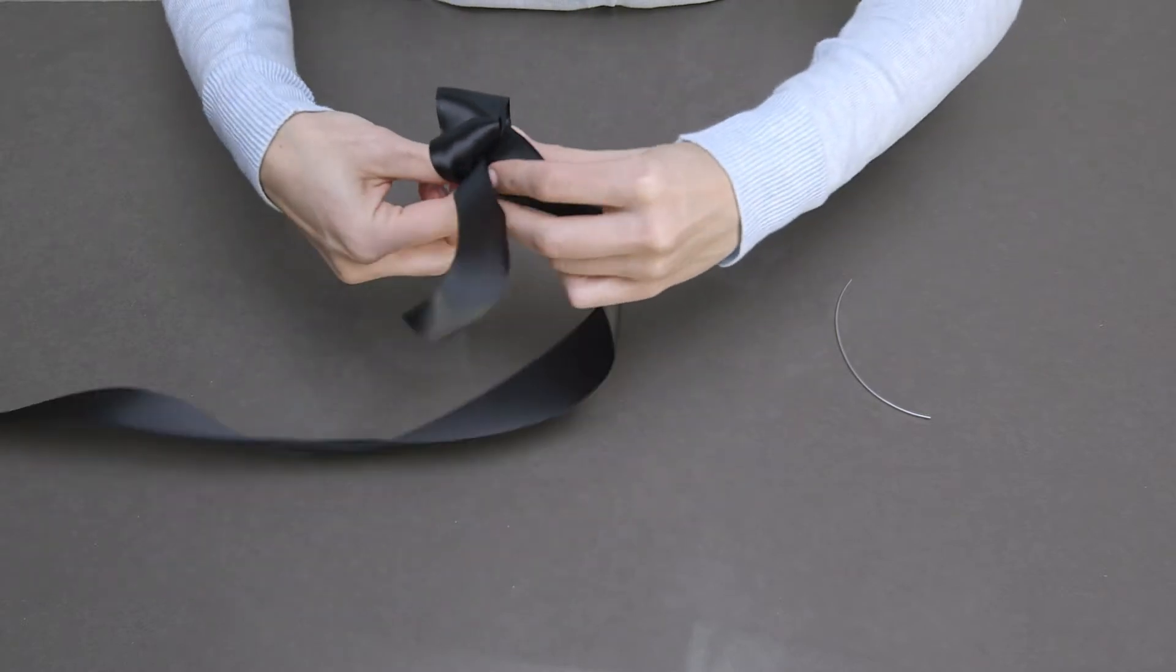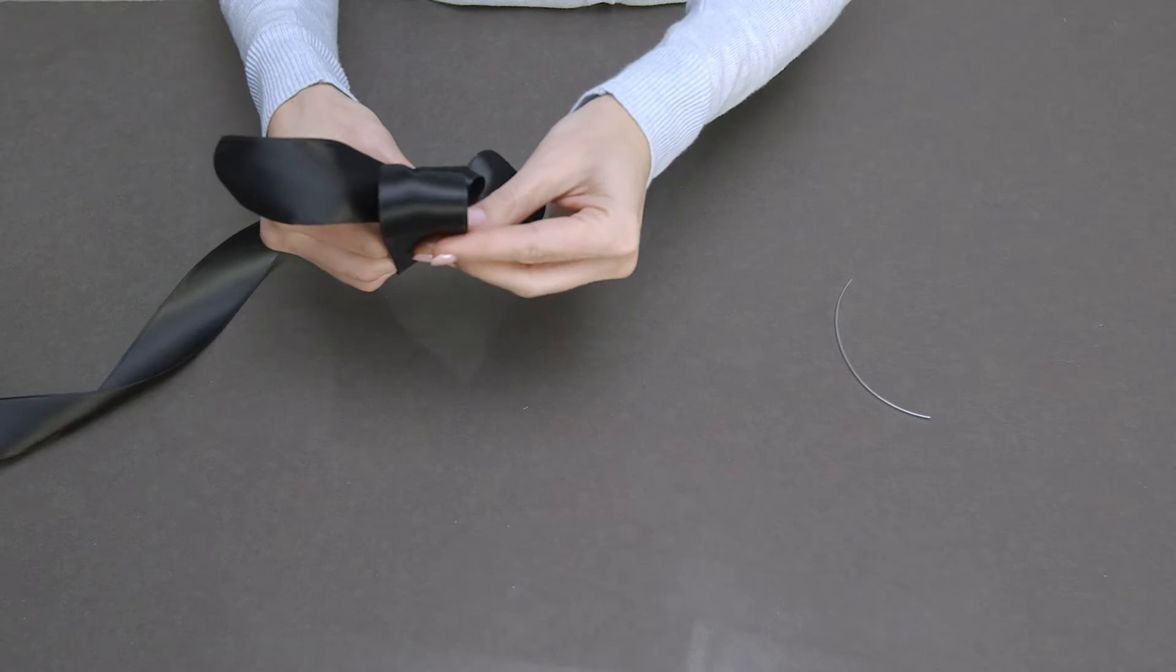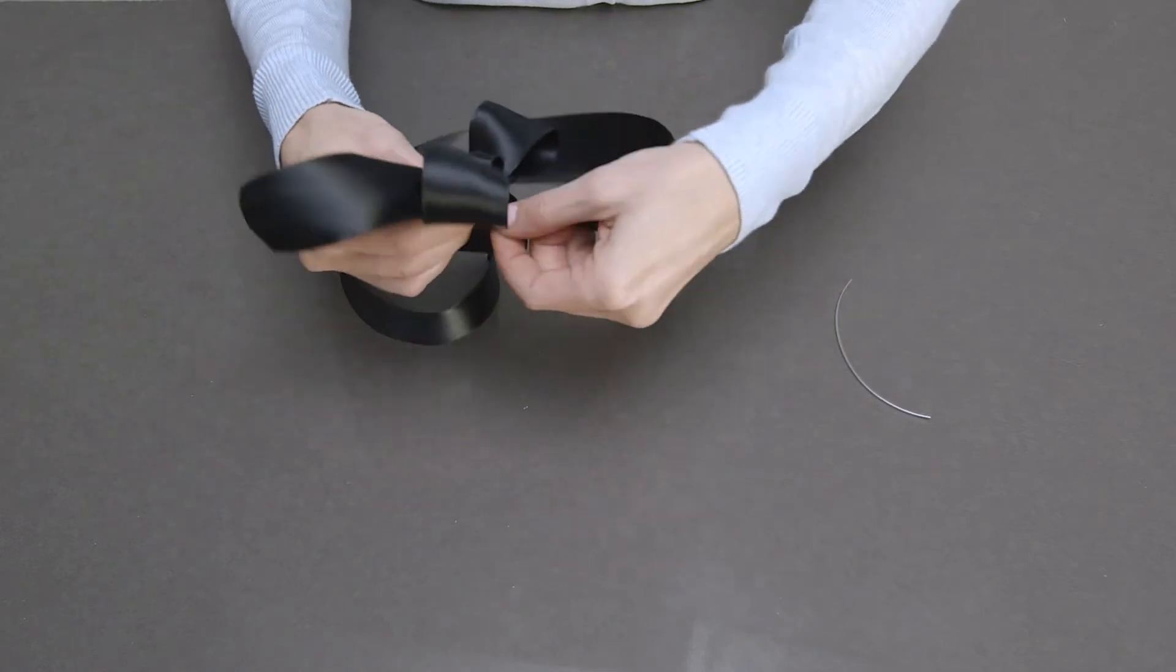Bring the ribbon back to the center and twist again, holding the loop securely with your fingers. Continue adding loops by alternating sides and keeping the center secured with your fingers.